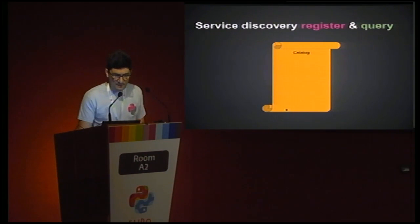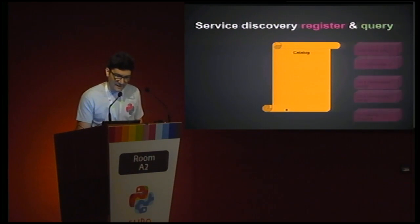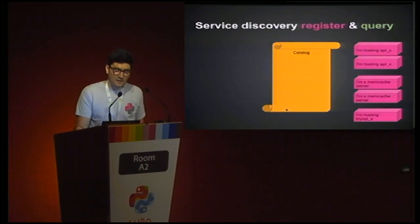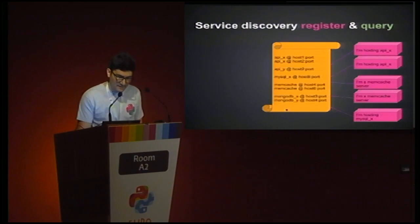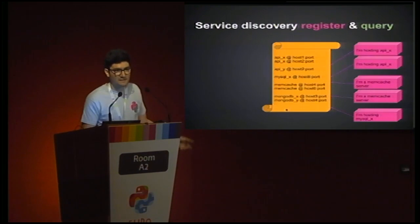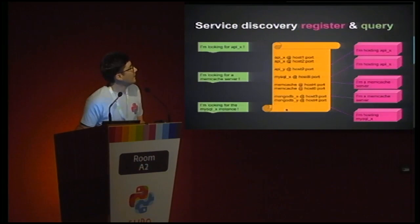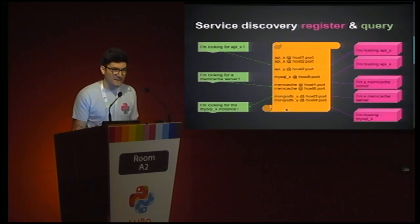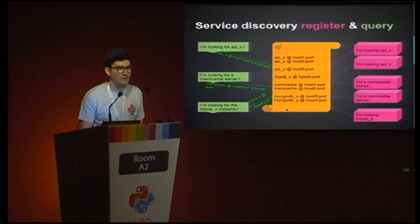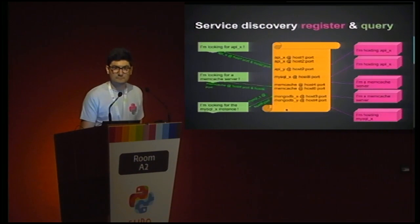There's a catalog provided by the service discovery technologies, and then you have your servers. Each of them provides a service — some provide the same service — and they register themselves into the catalog. You get a list of services running at host and port, multiple times if the service runs on multiple servers. Clients will look for a service by its name, query the catalog, and be handed a list of available hosts providing that service. This is service discovery.